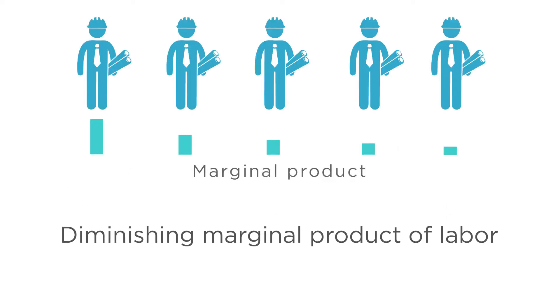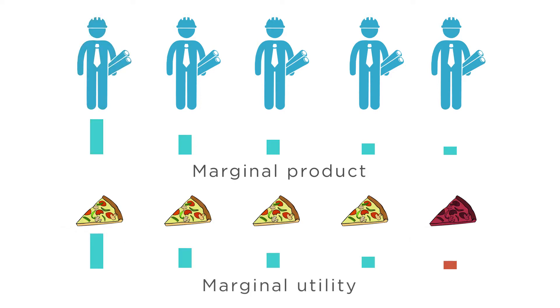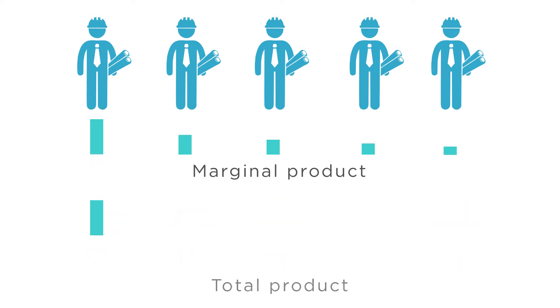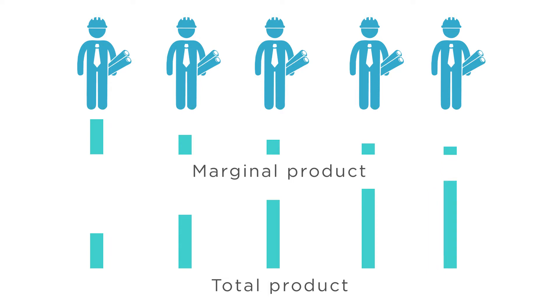This is an example of a key assumption we typically make for short-run production: there is a diminishing marginal product of labor. The next worker increases production less than the previous worker did. This is similar to the concept of diminishing marginal utility from consumer theory — the fifth worker doesn't add as much to the firm's productivity as the first worker, just as the fifth pizza slice doesn't contribute as much to your happiness as the first slice. Note that additional workers will almost always increase total production; the marginal product of each additional worker is positive, but this marginal product tends to get smaller and smaller as we add more workers.